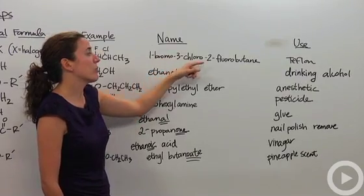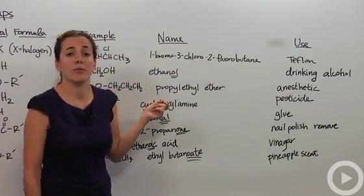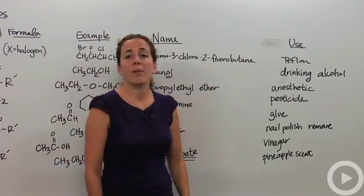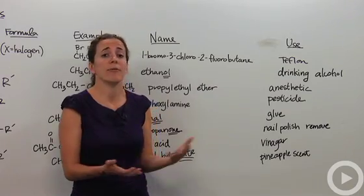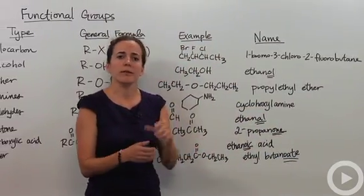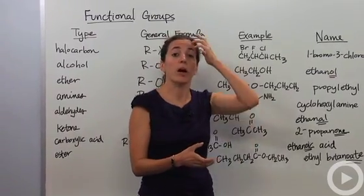Notice these are in alphabetical order, B, C, and F, even though the numbers are not the right way. Make sure your alphabetical order is always first. A practical use for halocarbons is Teflon. Teflon is a halocarbon, stuff that you use to make nonstick pans.